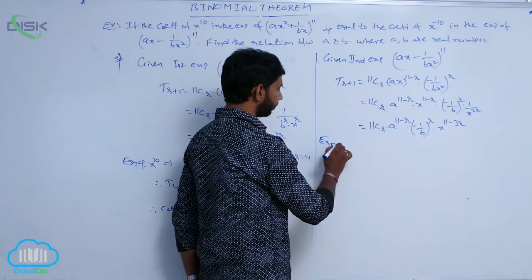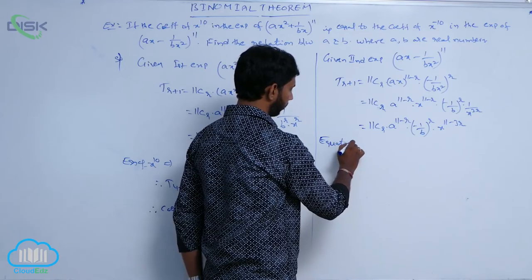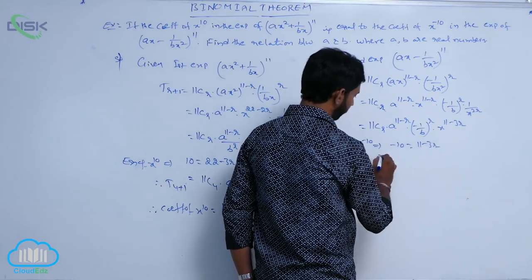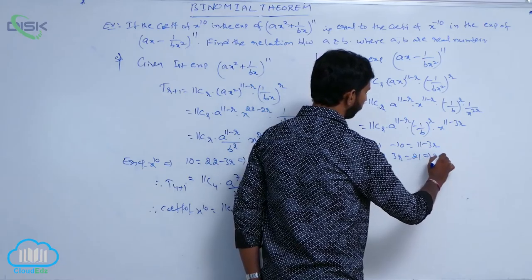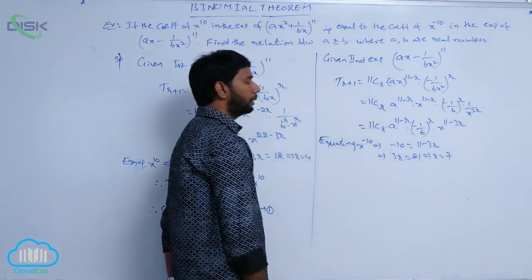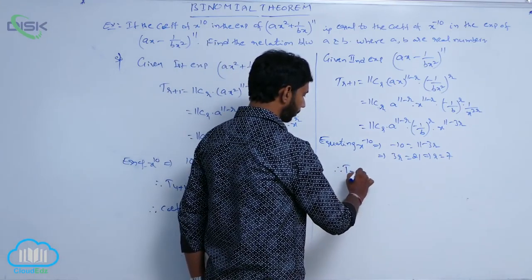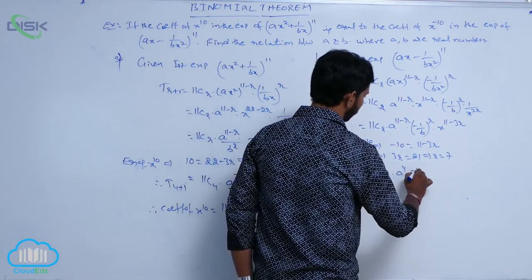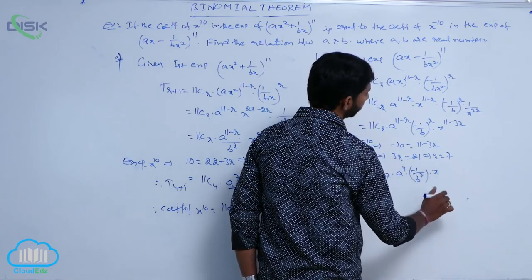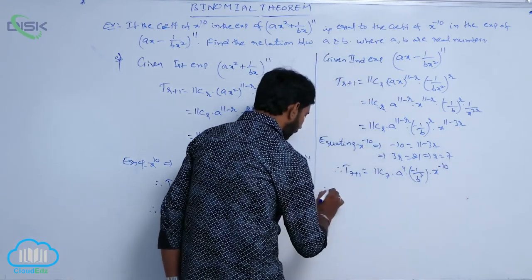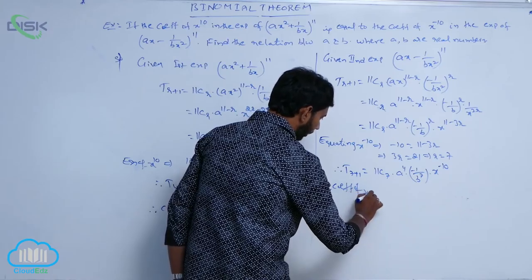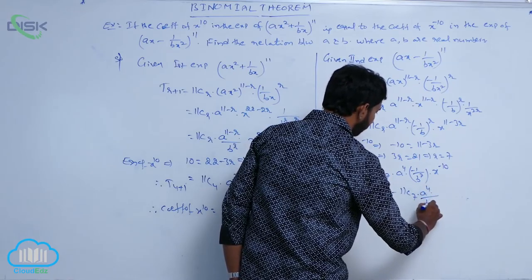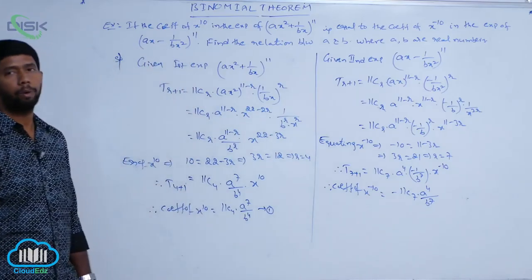Equating the power of x to minus 10: -10 = 11 - 3r, so 3r = 21, giving r = 7. Therefore T8 = 11C7 · a^4 · (-1/b)^7 · x^(-10) = -11C7 · a^4 / b^7. The coefficient of x^(-10) is -11C7 · a^4 / b^7.